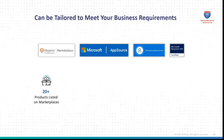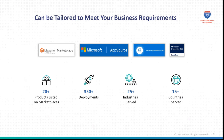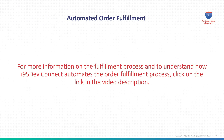i95 DevConnect is used by customers across 25-plus industries, and we have incorporated some very complex business requirements. Coming back to the customer sync, once this customer places an order, all related information syncs with the Business Central ERP system. Similarly, when the order is fulfilled, the shipping tracking number, invoices, and more are synced from the ERP to the Adobe Commerce system.